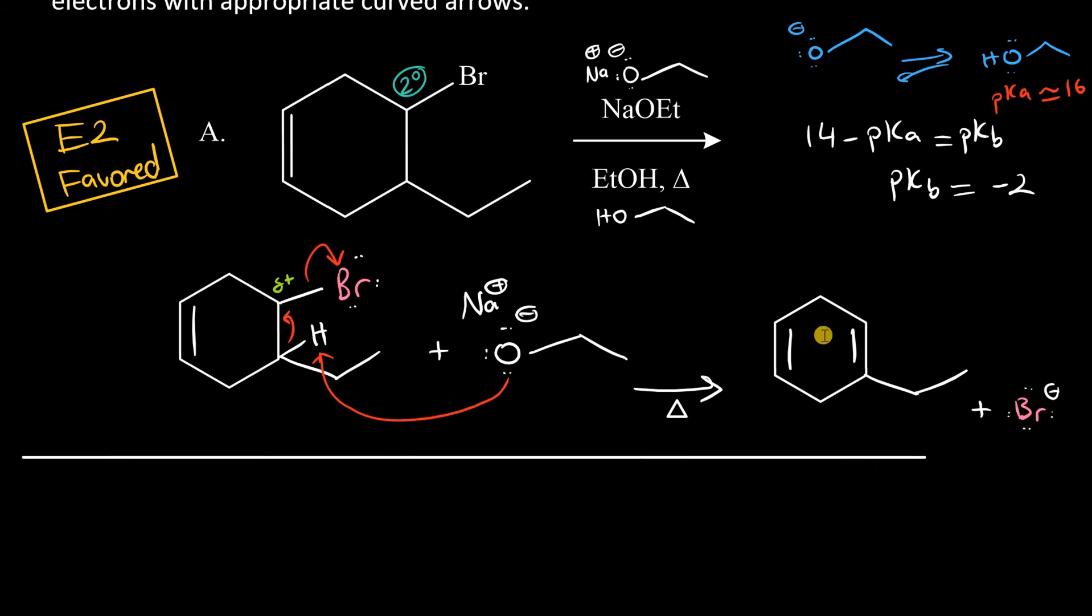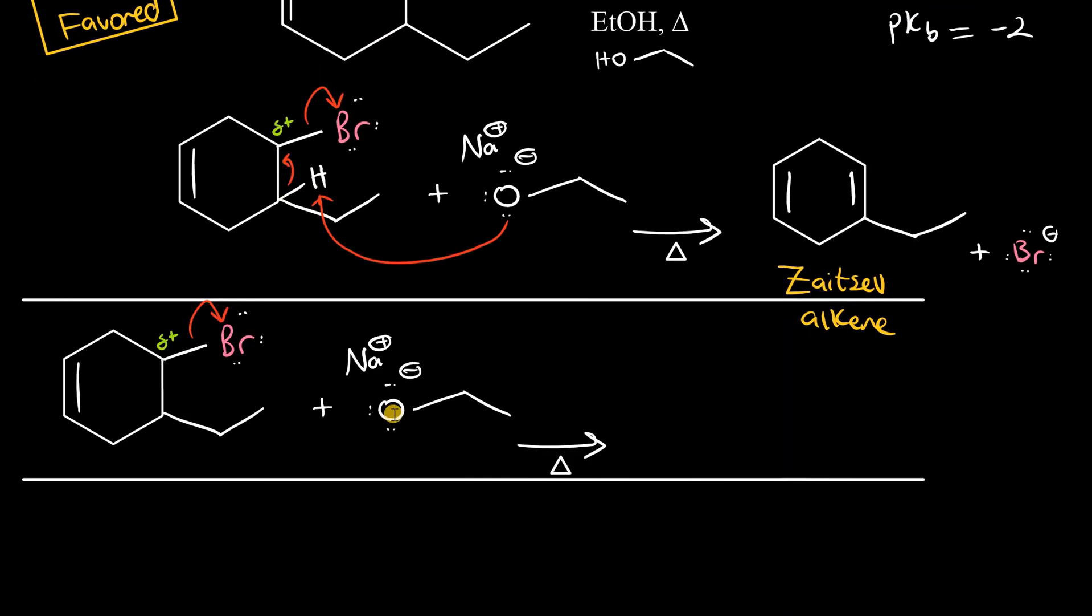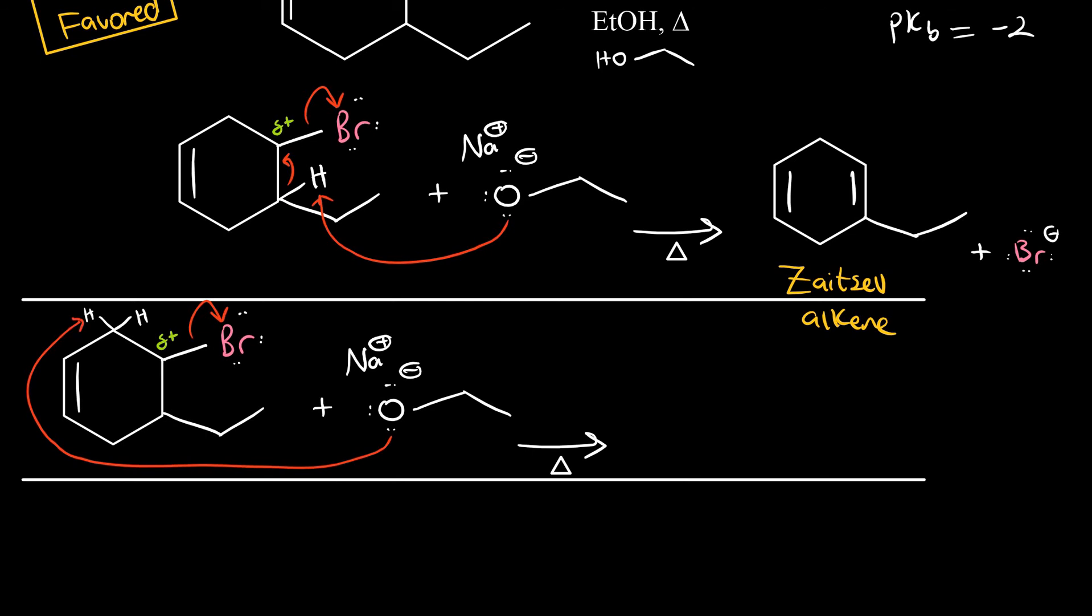This is considered the Zaitsev alkene because we have greater substitution. However, the Zaitsev alkene in this case is actually the minor product to a great extent, because this hydrogen here, or any one of these two hydrogens at this position, are also available to be deprotonated by the ethoxide anion. Similarly, the leaving group is expelled from the compound, forming a partial positive in the transition state, and the ethoxide can deprotonate using hydrogens at this position, the allylic position. Electrons flow from the ethoxide oxygen to the proton, and the electrons in the carbon-hydrogen bond return back into the compound. The resultant compound is conjugated, and we form the bromide anion.